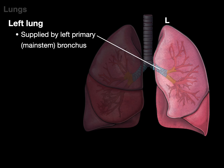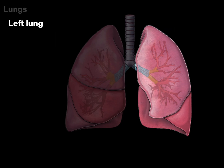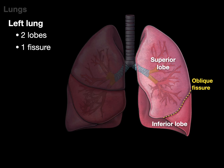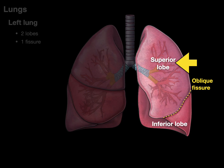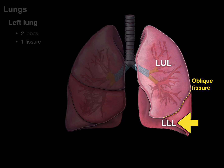The left lung is supplied by the left primary bronchus, which is more horizontal, longer, and more narrow than the right. The left lung has two lobes — a superior and inferior lobe — separated by one fissure, the oblique fissure. Things that make the left lung unique: only two lobes, not three; a cardiac notch where the left ventricle of the heart snuggles in; and on the superior lobe, there's the lingula — named because it looks like a little tongue sticking out. The lingula is the embryological middle lobe. The superior lobe is also called the left upper lobe, and the inferior lobe the left lower lobe.